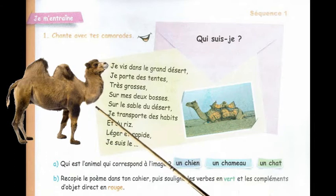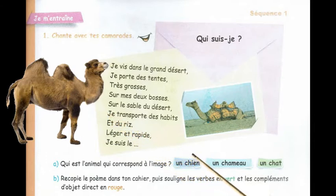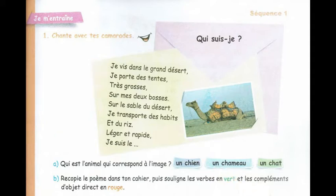Je réponds donc à la question A. L'animal qui correspond à l'image est un chameau. B. Je recopie le poème dans mon cahier, puis je souligne les verbes en vert et les compléments d'objets directs en rouge.